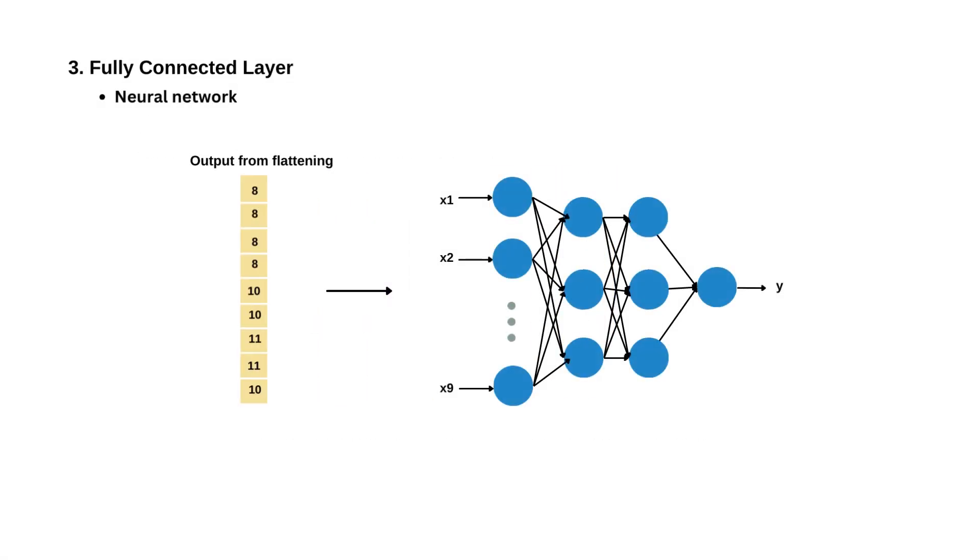After flattening, the data is passed through one or more hidden fully connected layers. Each layer consists of neurons connected to every neuron in the previous layer. The hidden layers allow the network to learn increasingly abstract and high-level features as you move deeper into the network. Fully connected layers typically include activation functions such as ReLU or sigmoid functions to introduce non-linearity into the network.